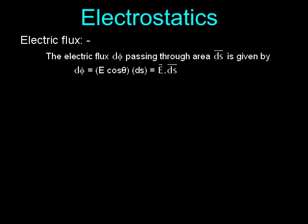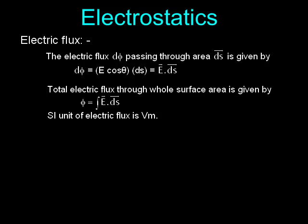Electric Flux: The electric flux dφ passing through the area element ds is given by dφ = E cos θ · ds = vector E · vector ds. The total electric flux through the whole surface is φ = ∫ vector E · vector ds. The SI unit of electric flux is V·m.